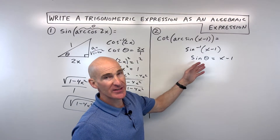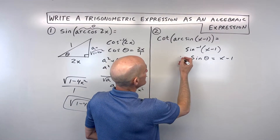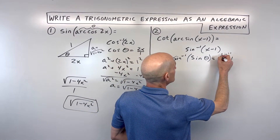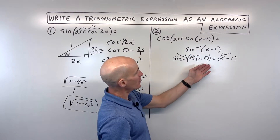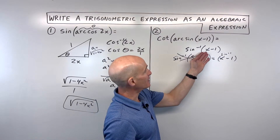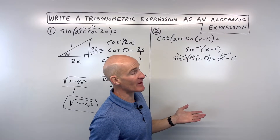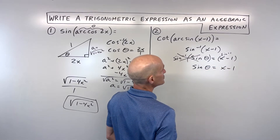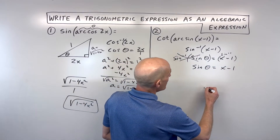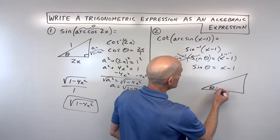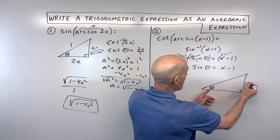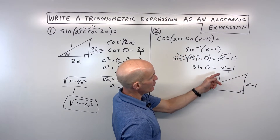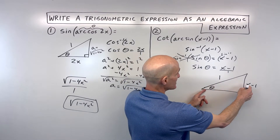If you're not sure about this and it's still a little fuzzy — imagine if you were to take the sine inverse of the left side and the sine inverse of the right side. The sine and the sine inverse undo one another, and you get theta equals sine inverse of x minus 1, which is the same as arcsine of x minus 1. So going back to what I wrote originally: the sine of theta equals x minus 1. Let's go ahead and draw a right triangle. The sine is the ratio of the opposite side over the hypotenuse.